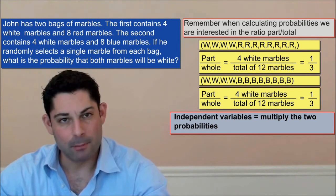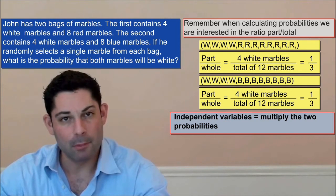If you want to determine the probability of two independent events taking place, you have to multiply the probability of each independent event.